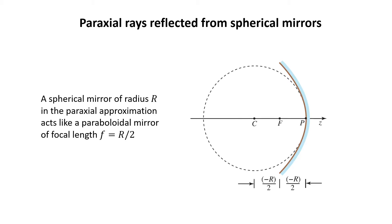As we see here, when we are very close to the axis, the spherical mirror is tangent to the paraboloidal mirror. This is the paraxial approximation.